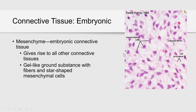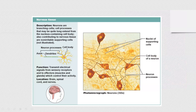The last connective tissue to cover briefly is mesenchyme tissue — an embryonic connective tissue that gives rise to all other connective tissue. It has a gel-like ground substance with fibers and star-shaped mesenchymal cells. In the histology slide, cells look like little stars within a matrix with fibers.